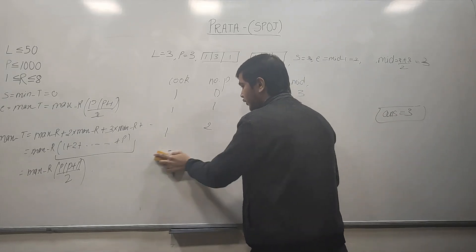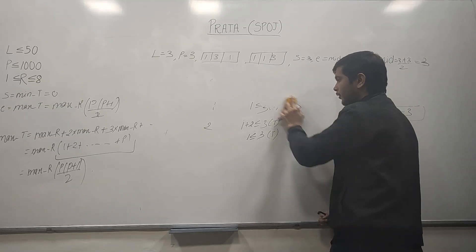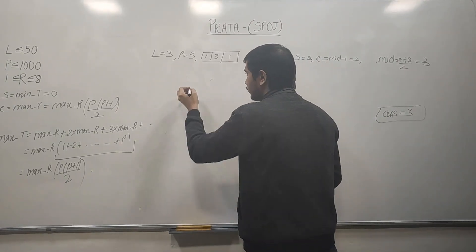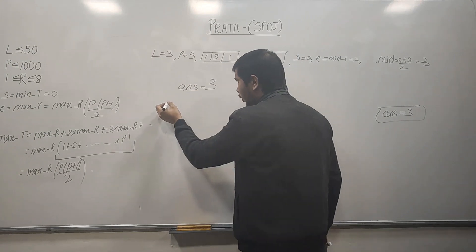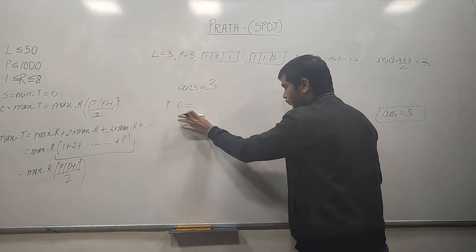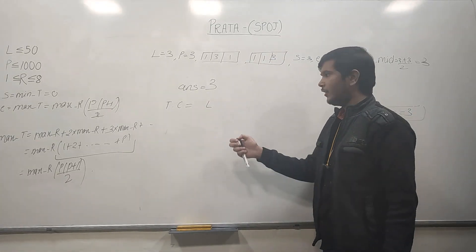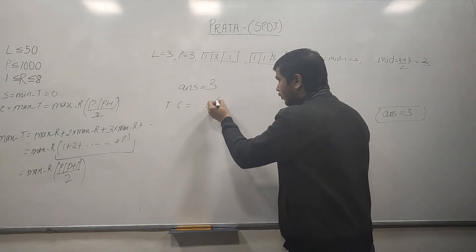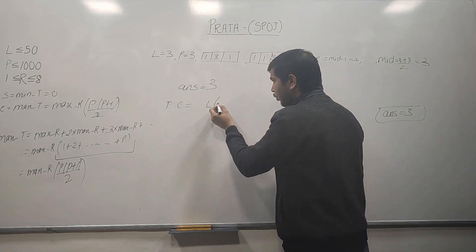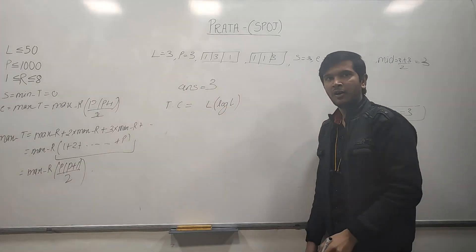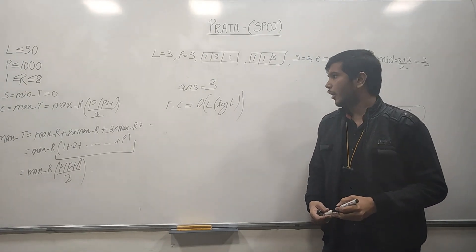We have calculated our answer using binary search, and it came out to be 3 minutes to form 3 prattas in this example. The time complexity of this solution is: for every binary search iteration we iterate over the whole array of size L, and binary search takes O(log(maxTime)). So our total time complexity is O(L × log(maxTime)).